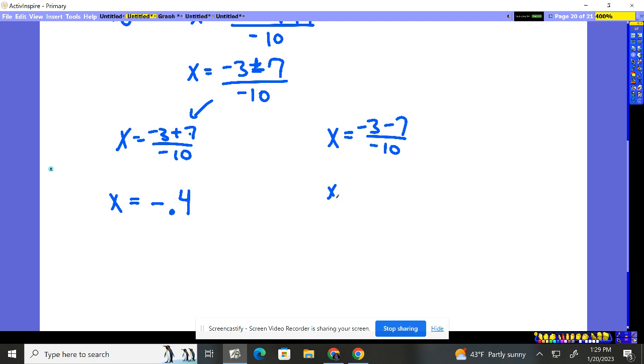Over here, negative 3 minus 7 is negative 10. And what is negative 10 divided by negative 10? Positive 1. So positive 1 is our other solution here to this quadratic equation.